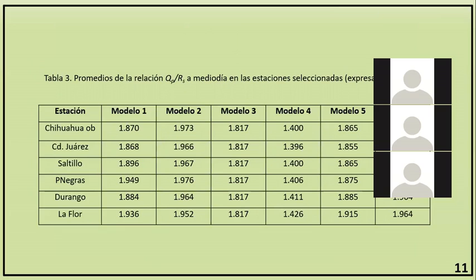En la literatura es muy común que la radiación PAR sea estimada como una fracción de la radiación solar, utilizando la relación QP/RS, donde QP es la radiación PAR y RS la radiación solar. La tabla 3 muestra los promedios de los resultados de la relación QP/RS en cada estación. El valor mínimo reportado en la literatura es de 1.78 micromoles por Joule y el máximo de 2.39 micromoles por Joule. Los resultados del trimestre de abril a junio están dentro de este rango, con excepción del Modelo 4, que está por debajo del valor mínimo.